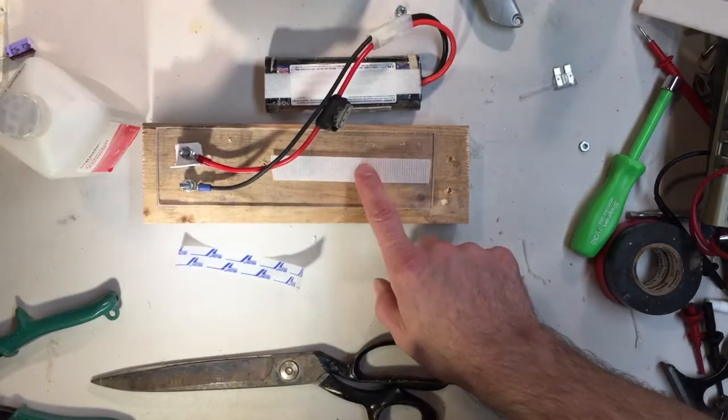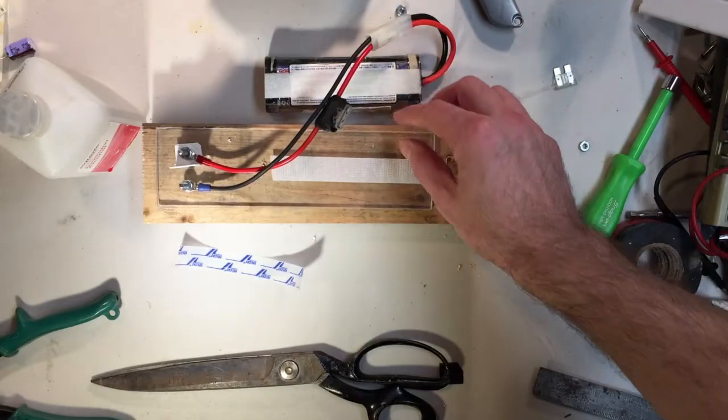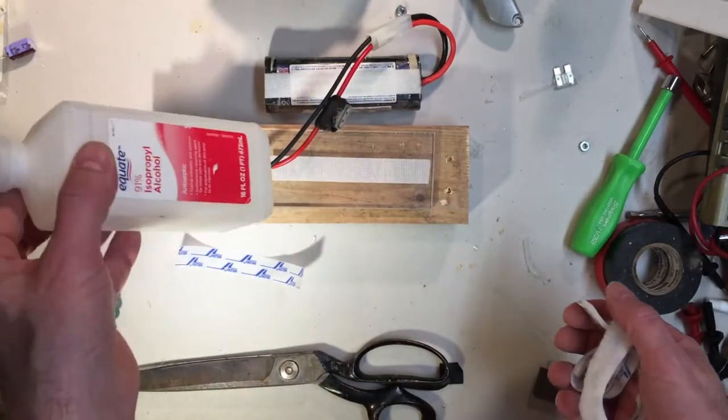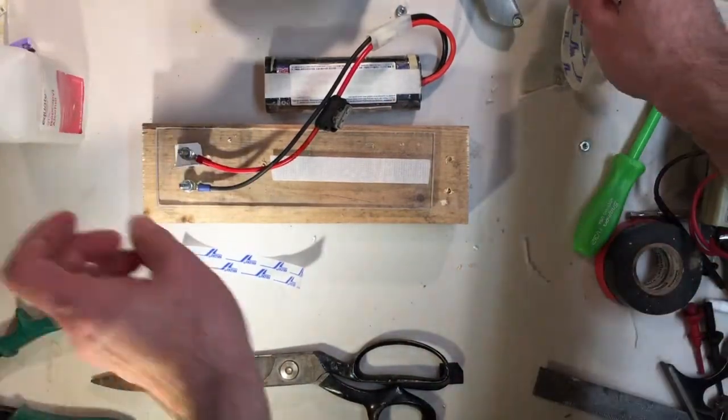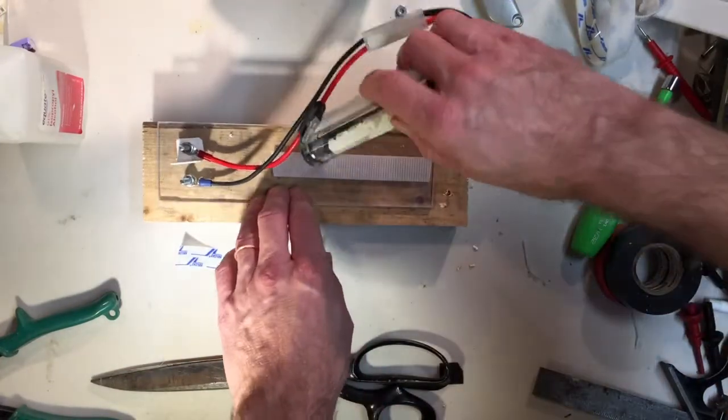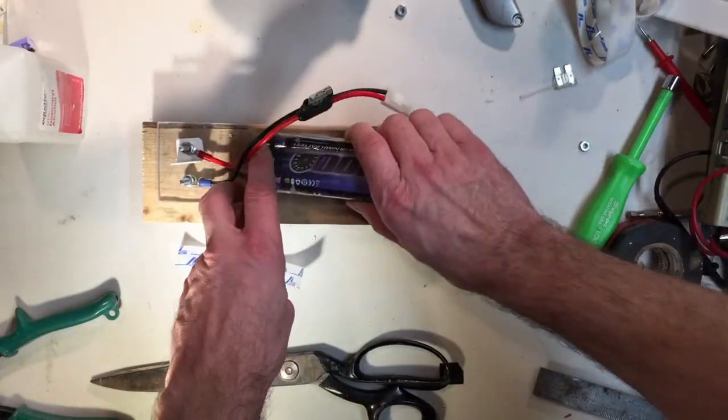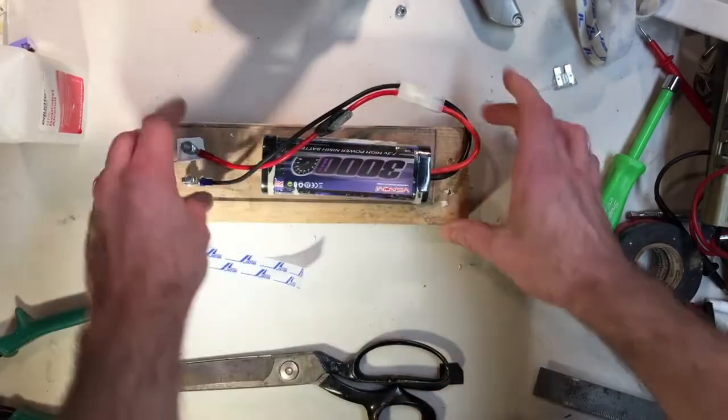So we just applied some Velcro down to our battery and our battery holder. So cleaned off the surfaces with a little bit of ISO beforehand just so that everything sticks. And then so now you can see the battery will stay nicely in place on the battery holder.